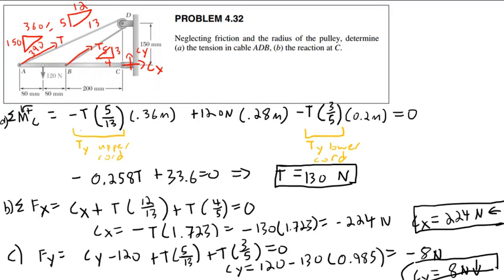The student notes: you chose CY upward, that's why the negative means downward. Yes, exactly. I like to choose methods that require zero thought — I'm just going to draw all reactions to the right and upward, and if I get a negative number, it means it goes the other direction. It's more foolproof. Regarding the exam: either expressing as a negative value or stating the direction is fine.